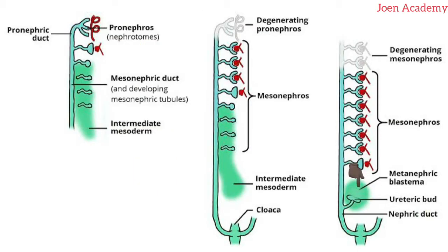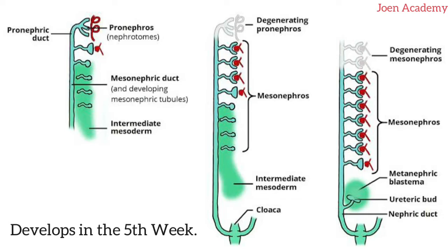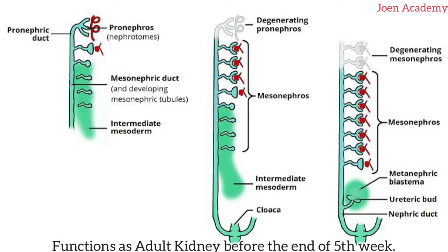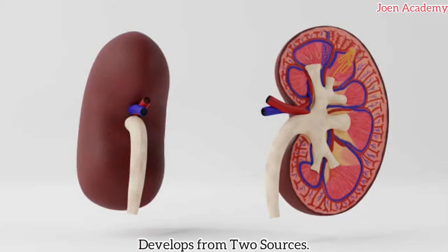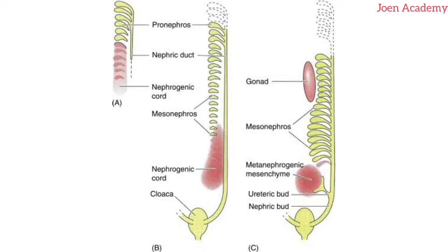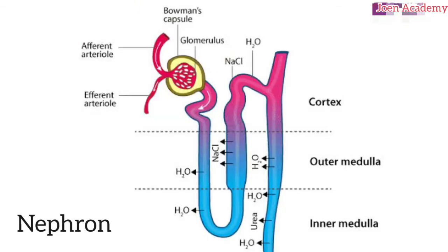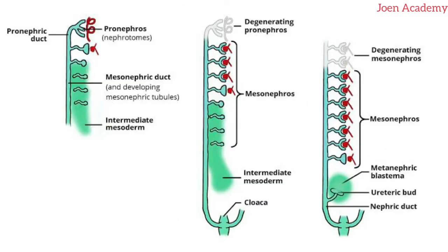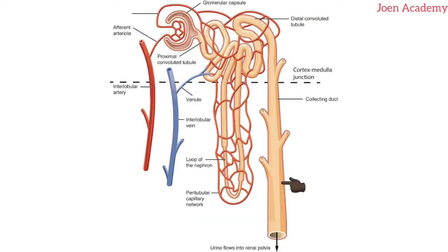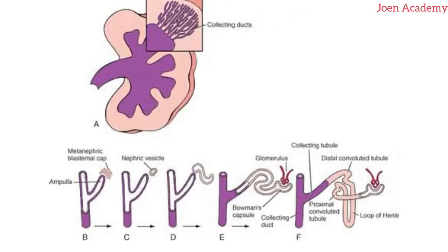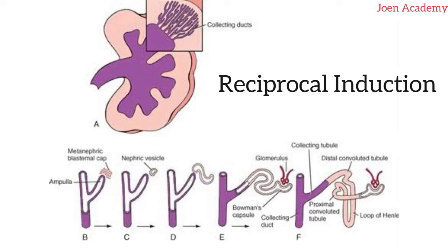The metanephros develops in the fifth week and begins to function as the adult kidney before the end of the fifth week. The human kidney develops from two major sources. The first part develops from the mass of metanephros derived from the nephrogenic cord — this is the excretory part of the kidney known as the nephron, and the mass from which it develops is known as the metanephric blastema. The other source is derived from the ureteric bud, which is the metanephric diverticulum — this part is the collecting duct of the kidney. These two parts interact and induce each other through secretion by a process called reciprocal induction to form the permanent kidney.